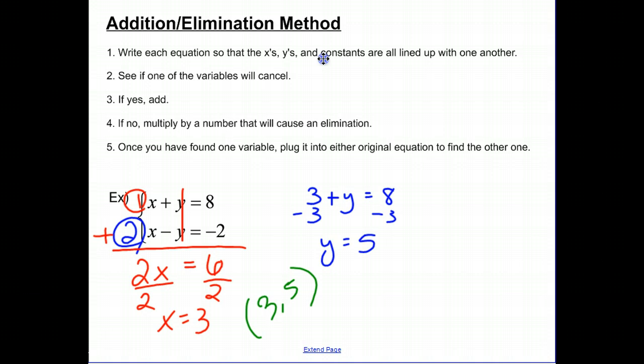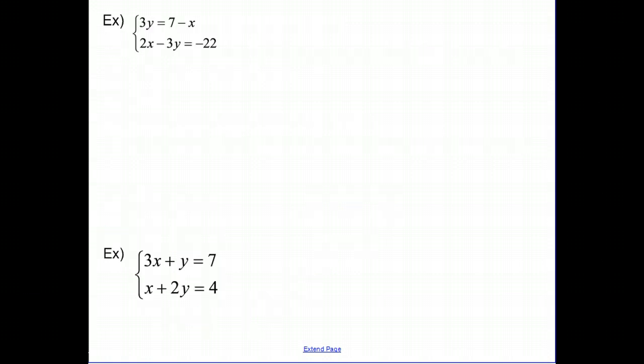Let's take a look at a couple more examples that maybe use more steps. So looking at this top example here, 3Y equals 7 minus X, 2X minus 3Y equals negative 22. So right away, my first step is to have everything lined up, and you should notice right away that things are not lined up.